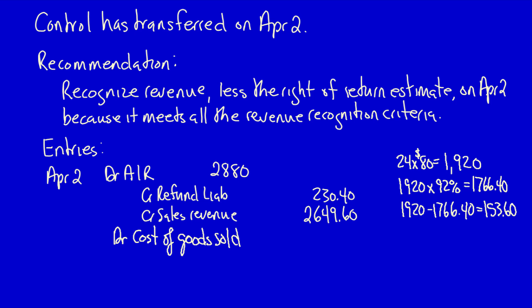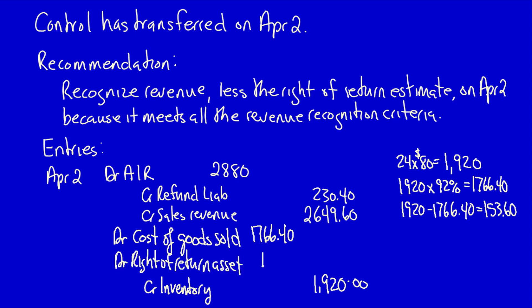The difference is recorded as a right of return asset, recognizing that this inventory might come back to us. Debit cost of goods sold for one thousand seven hundred and sixty-six dollars and forty cents — matched to sales revenue recognized at 92%. Credit inventory for the full one thousand nine hundred and twenty dollars withdrawn. The difference is a debit to the right of return asset: one hundred and fifty-three dollars and sixty cents. The entry balances.